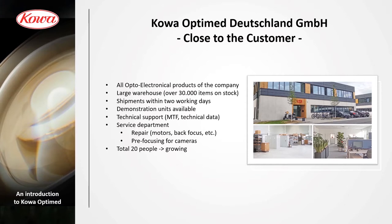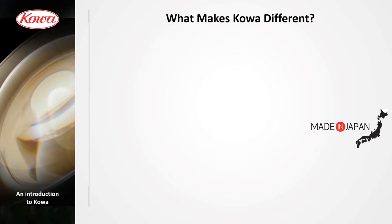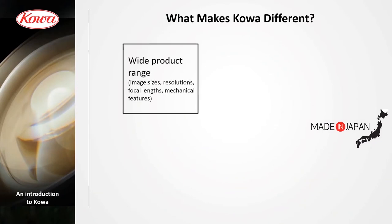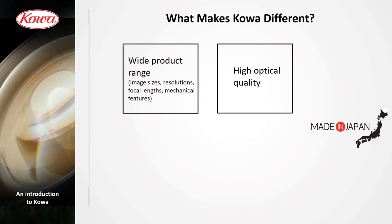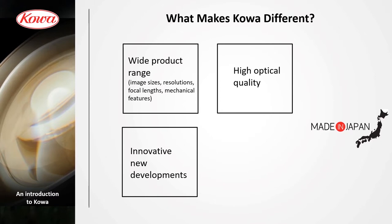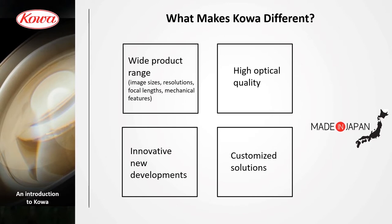We have a large warehouse and can deliver most lenses within a few business days from stock. What makes Cova different? We have a very wide range of products, so usually you will find something for your application in our catalog. We position ourselves in the higher optical quality segment. Every year we bring out innovative new developments, and we are quite flexible when offering customized solutions.